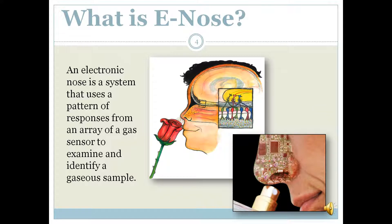What is an e-nose? An electronic nose is a system that uses a pattern of responses from an array of gas sensors to examine and identify a gaseous sample. It is a device intended to detect odors and flavors. Over the last two decades, electronic sensing or e-sensing technologies have undergone important developments from a technical and commercial point of view. The expression 'electronic sensing' refers to the ability to reproduce human senses using sensor arrays in pattern recognition systems.